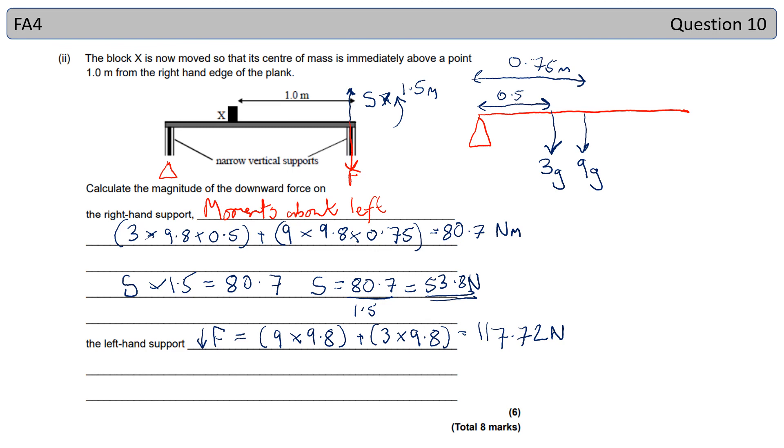Well, I know that my upward force at the right-hand side is 53.8. So if I take that away from the total force, that will give me what this force here has to be. So 117.72 minus 53.8 gives me a force of 63.92 Newtons.